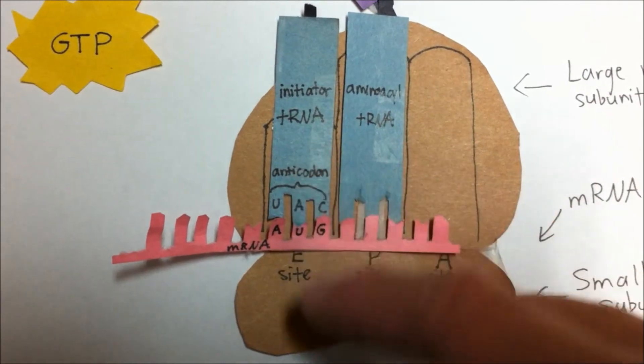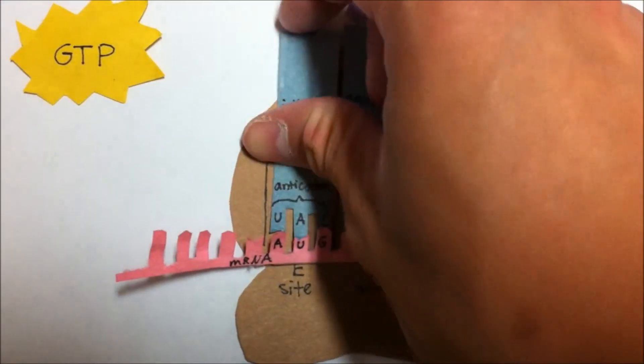Now that the tRNA is in the E site, it is now released from the ribosome.